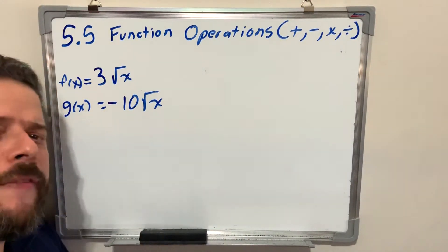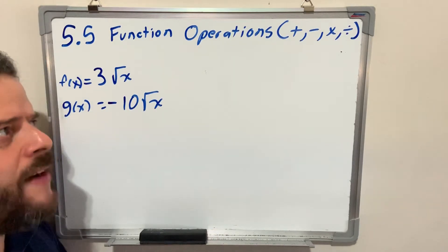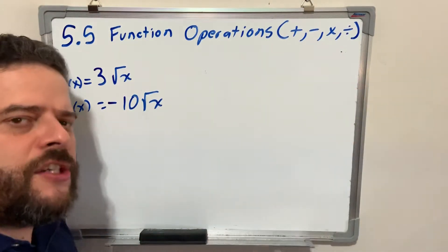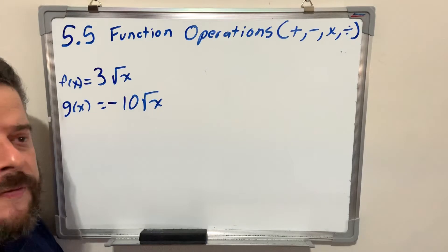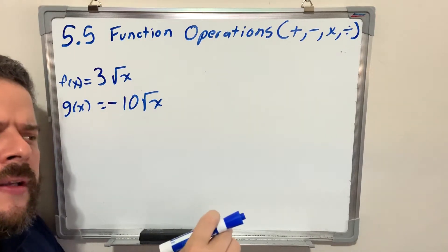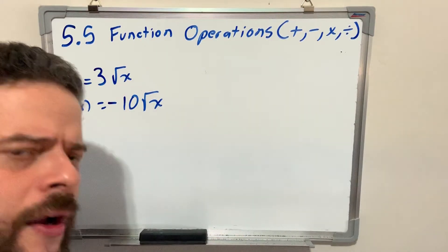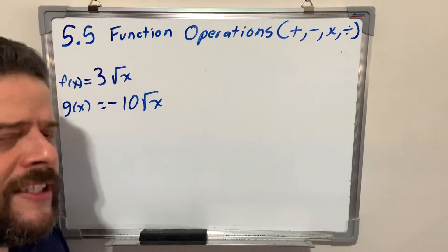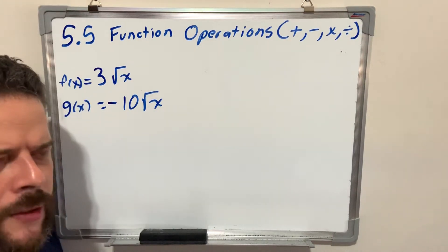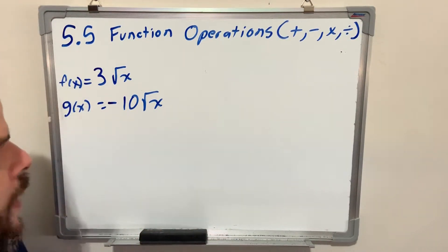Today, we're going to go over 5.5, function operations, which have to do with addition, subtraction, multiplication, and division of functions. This chapter will focus on radical and exponential functions, though we might cross regular polynomials and functions.